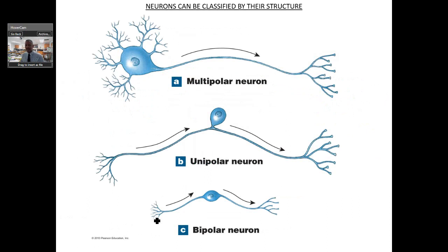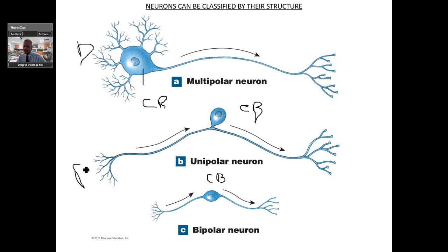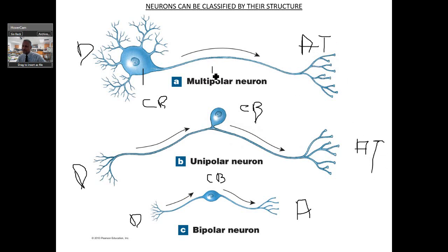There are three distinct types of neurons structurally. Looking at the pictures, you can identify each by its cell body, dendrites, and axon. This one here is called a multipolar neuron. You also have a unipolar neuron and a bipolar neuron. In class I usually hand this out and we label it together.